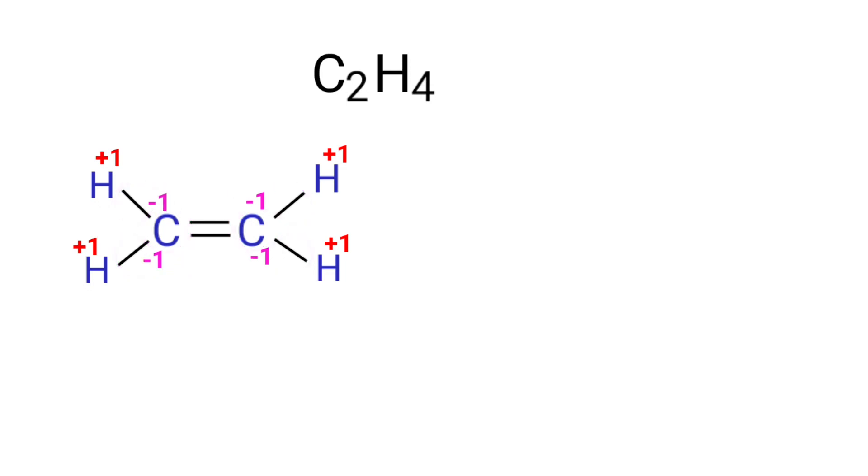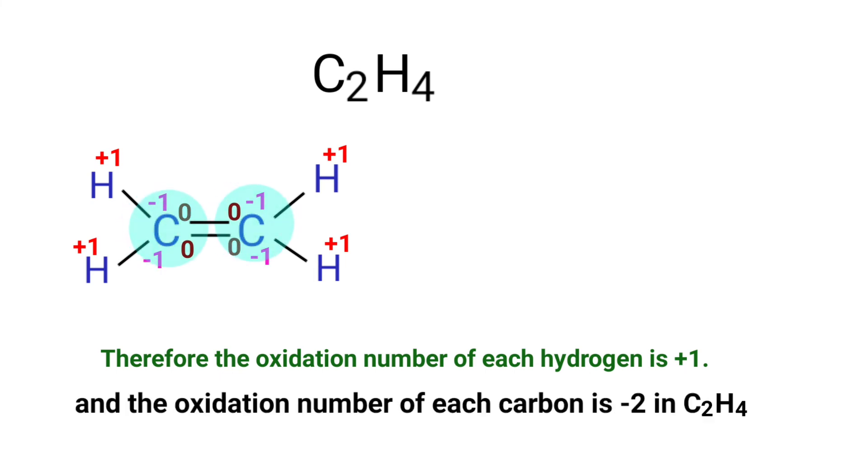In the CC bonds, the carbon atoms have the same electronegativity number, so the oxidation number of carbon atoms in CC bonds is zero. Therefore, the oxidation number of each hydrogen is plus one and the oxidation number of each carbon is minus two in ethylene.